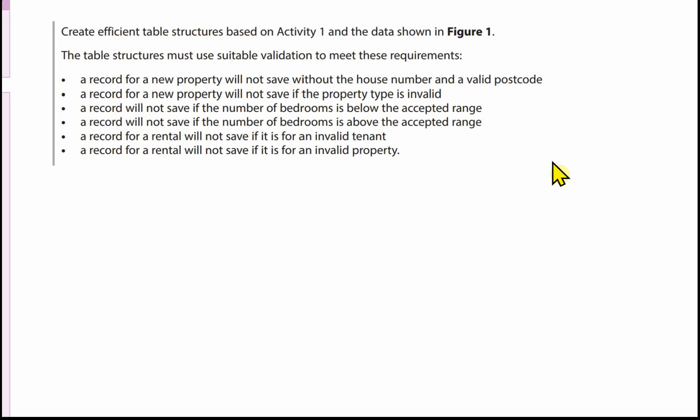A record for a new property will not save without the house number and a valid postcode. A record will not save if the property type is invalid. A record will not save if the number of bedrooms is below or above the accepted range. A record for a rental will not save if it is for an invalid tenant, and a record for a rental will not save if it is for an invalid property.